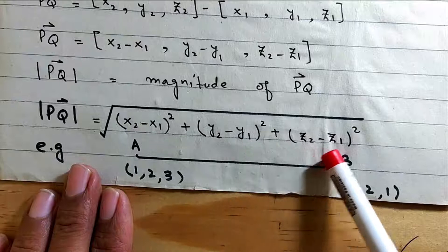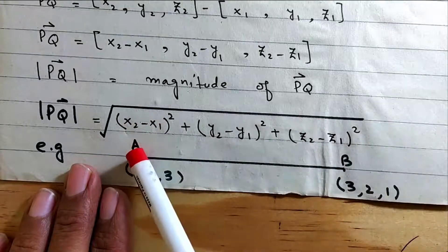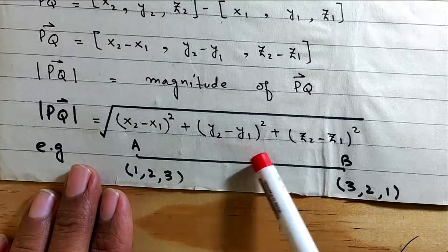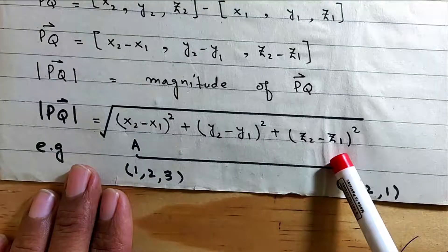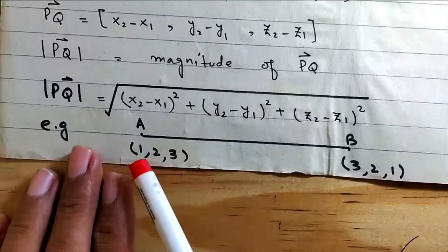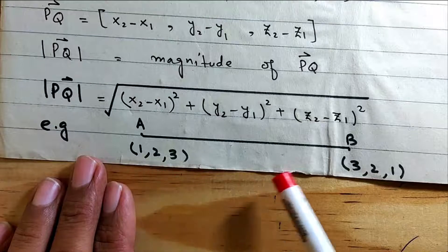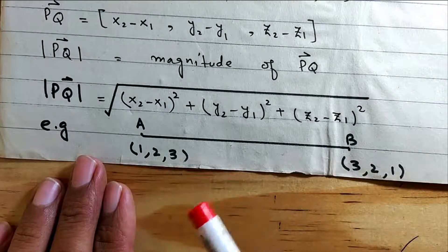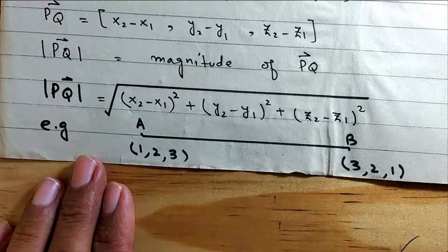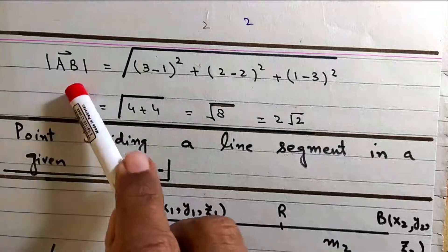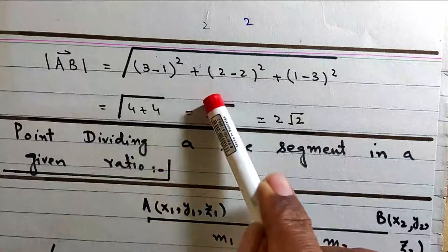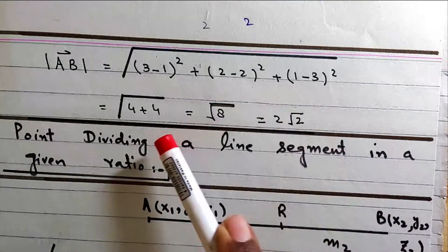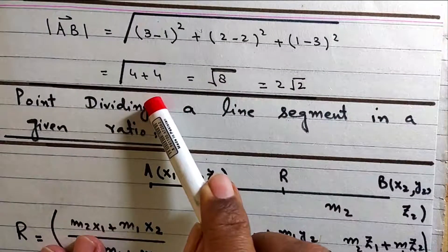With z1 squared, plus the second squared, plus the second squared. Now we calculate: for example, 3 minus 1 gives 4, plus 4, and we get the distance.